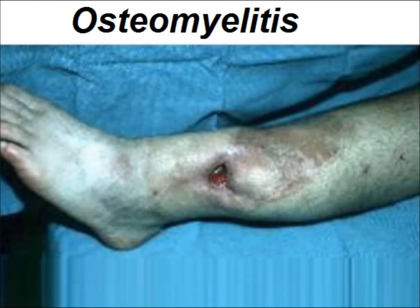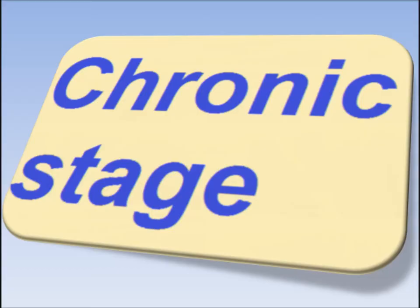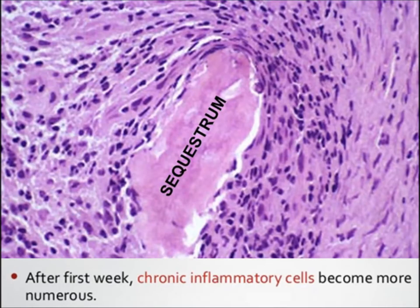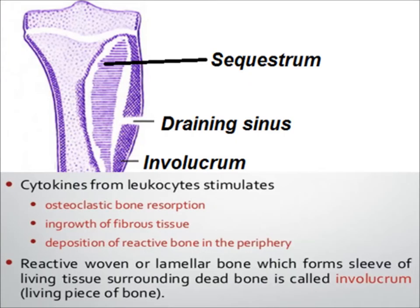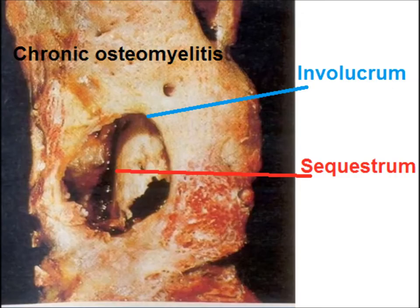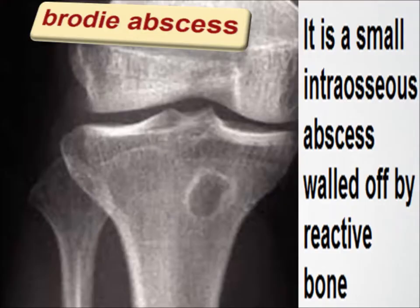In the chronic stage, as with chronic infection anywhere, the infiltrate becomes mononuclear — neutrophils and plasma cells are present. Because of the longer duration, sequestrum and involucrum form; the involucrum is reactive new bone that is formed around the dead bone. This is the characteristic morphology of chronic osteomyelitis.